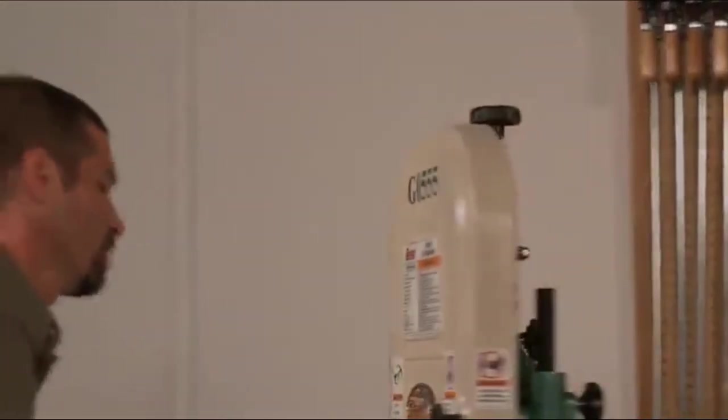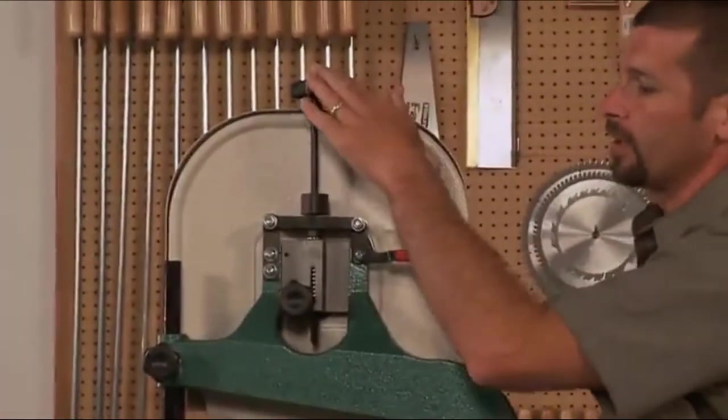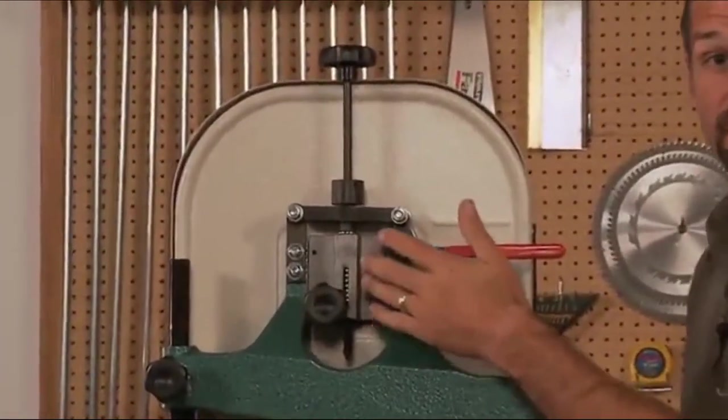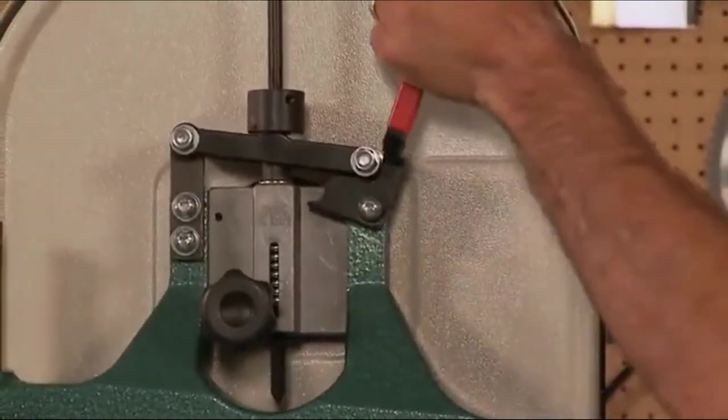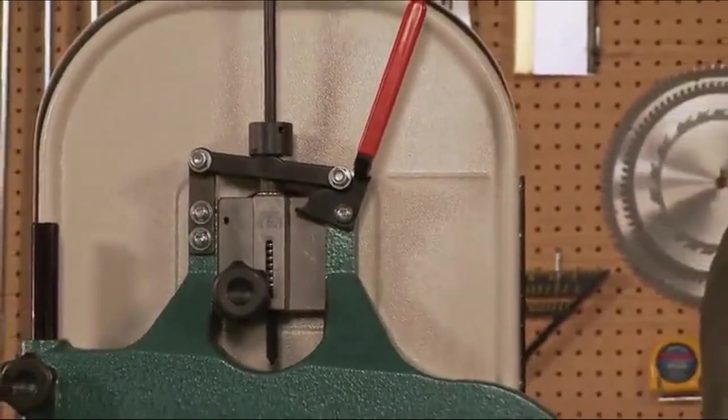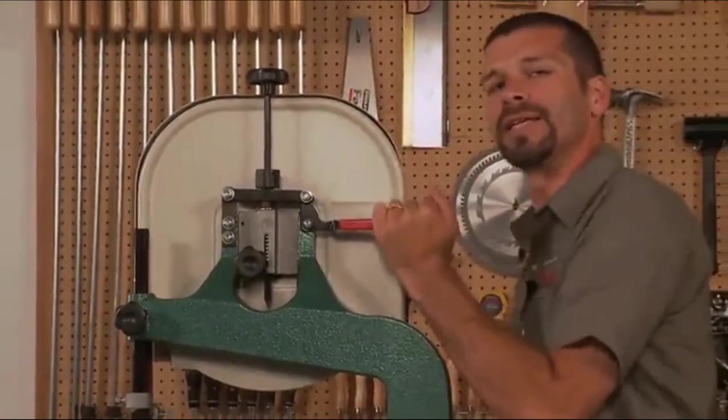Blade tension is adjusted using the knob on the top of the bandsaw, right here. The saw also features a gauge that's calibrated for different blade widths. The quick release blade tension lever allows you to quickly release the blade tension when not in use to maximize blade life and then re-tension the blade again when needed.